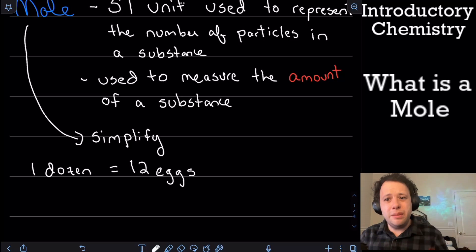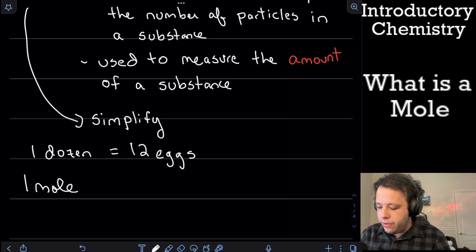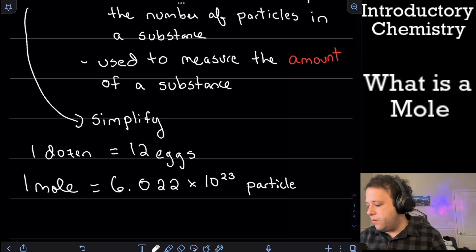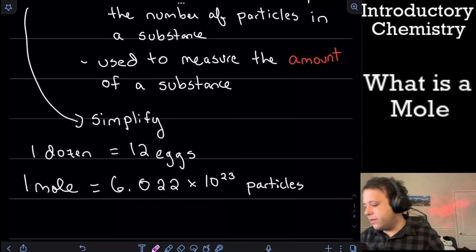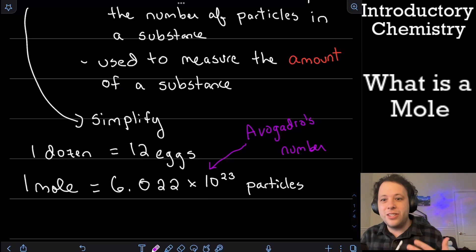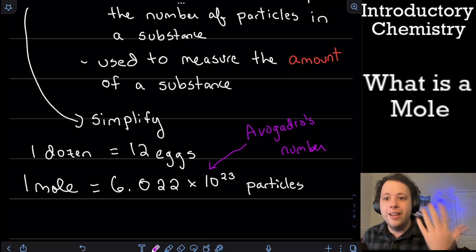A mole is very similar to that process. When we say we have one mole of a substance, we're saying how many particles there are. We have 6.022 times 10 to the 23 particles. That number is called Avogadro's number — I like to think it sounds like avocado. One mole is that many particles, which is a really big number, because particles or atoms or ions are so tiny they can't physically be seen.